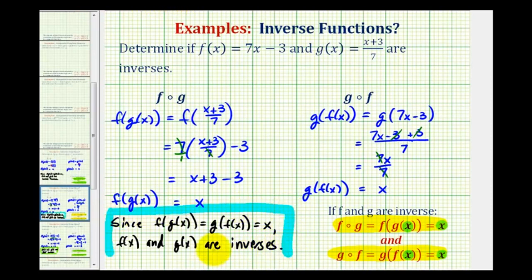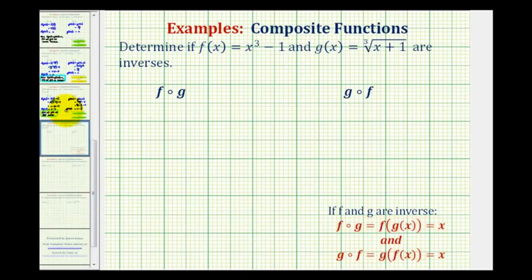Let's take a look at a second example now. Here f of x equals x cubed minus one, and g of x equals the cube root of x plus one. Again, to verify that these are inverse functions, we must show that both of these composite functions are equal to x.